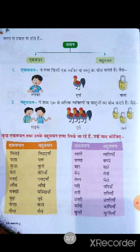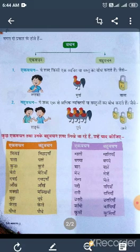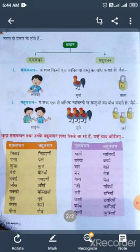मेज — मेजें, मेला — मेले, नदी — नदियाँ, रानी — रानियाँ, छतरी — छतरियाँ, कॉपी — कॉपियाँ, कुर्सी — कुर्सियाँ। यह सब कुछ एक वचन और बहुवचन शब्द थे।